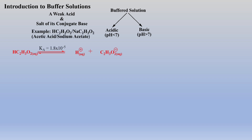The given Ka value for acetic acid indicates it is a weak acid, and we will most likely be given a volume and molarity of the weak acid within some problem. In this example, the conjugate base is delivered via sodium acetate, which is an ionic compound or salt.